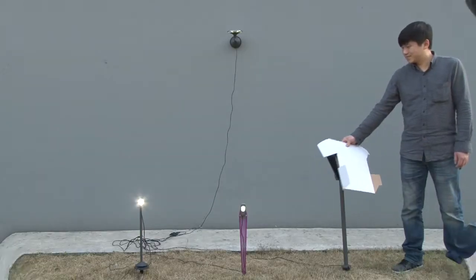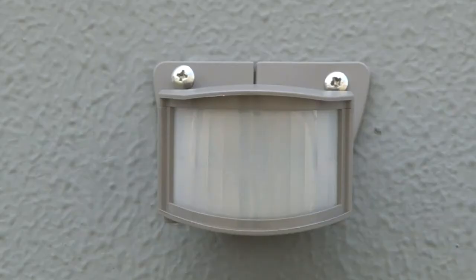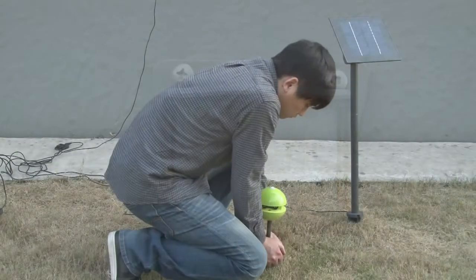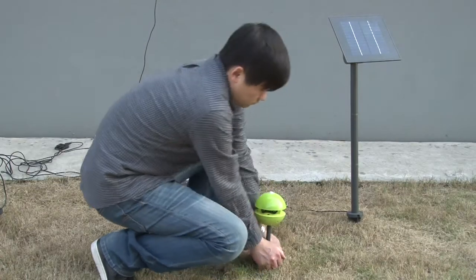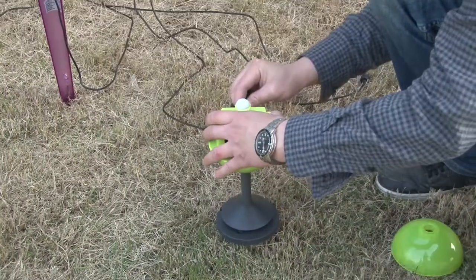Combination three: solar panel plus green bulb plus lighting fixtures and sensor. Set the sensor to the correct position, then add the green bulb into the system.